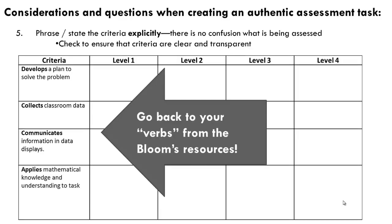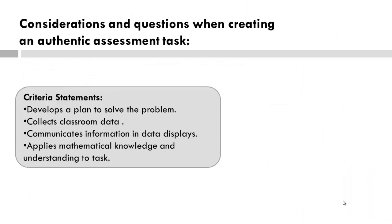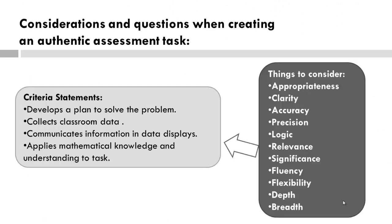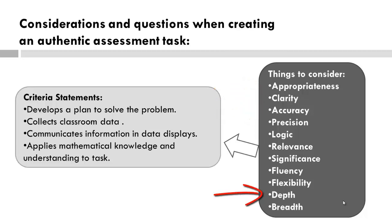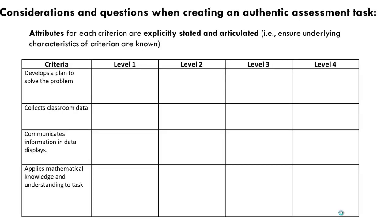Here are the criteria placed in a matrix or grid. Upon first glance, the criteria this rubric will address still allows for learners to demonstrate their learning in a variety of ways. If the criteria stated 'develop a text-based plan to solve the problem,' how does that limit the learning? Consider also the various cognitive processes — how do these verbs relate to these processes? Then we need to consider what exactly we are looking for within the criteria. For example, what specifically about developing a plan to solve a problem do you want to consider? Is it the level of appropriateness, the clarity of the plan, the accuracy, the depth? We need to consider qualifiers to describe each criterion to create a continuum of learning for each particular criterion. Understanding of the task and the learning objectives is important.